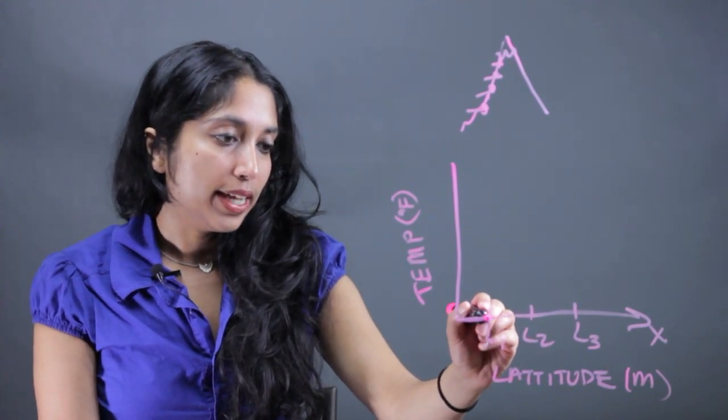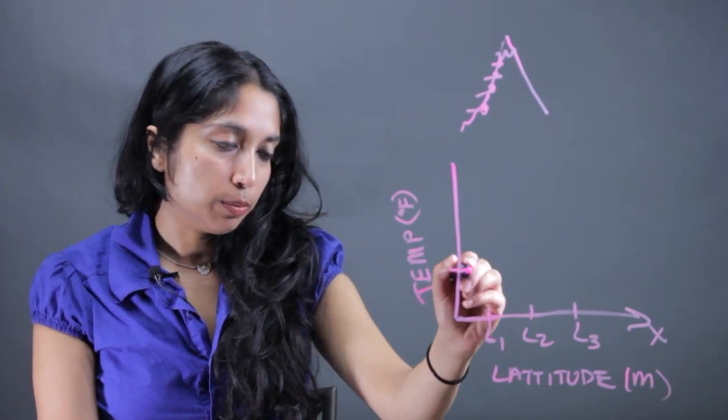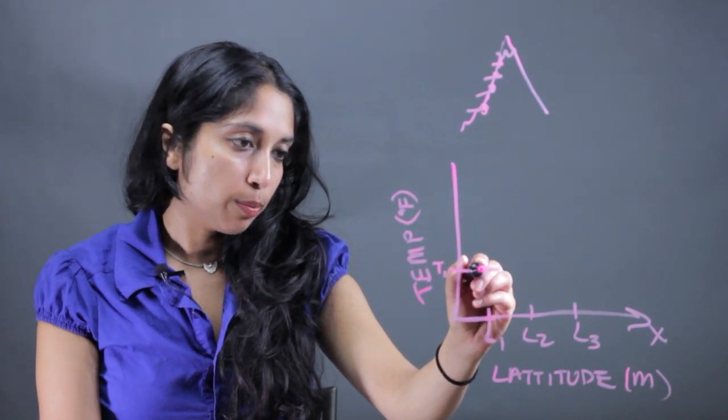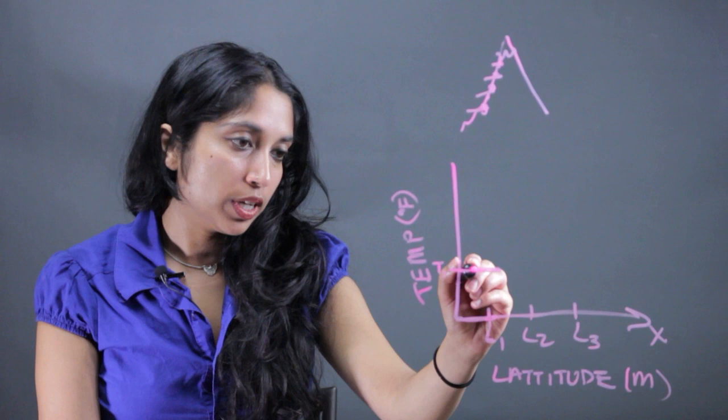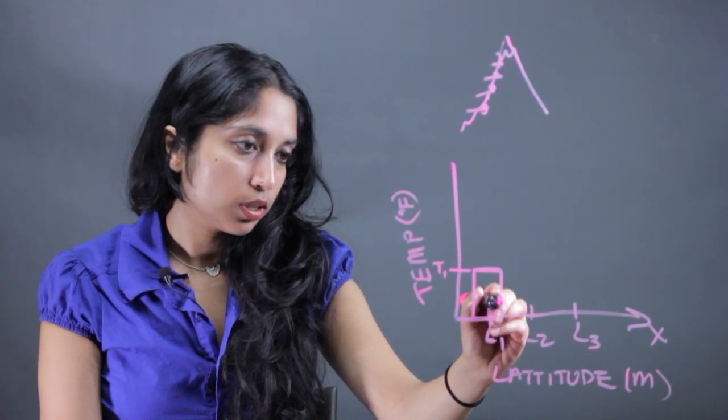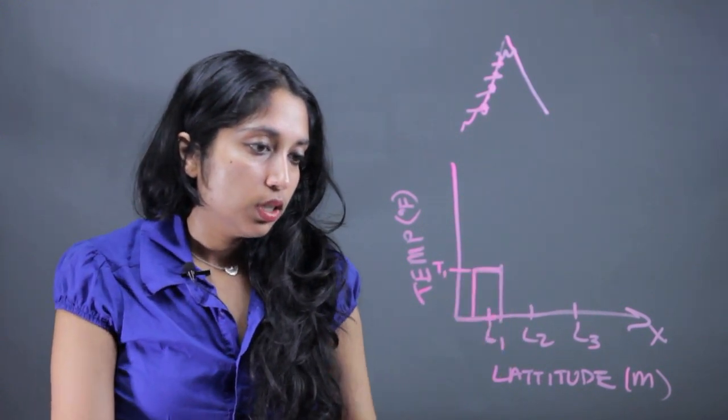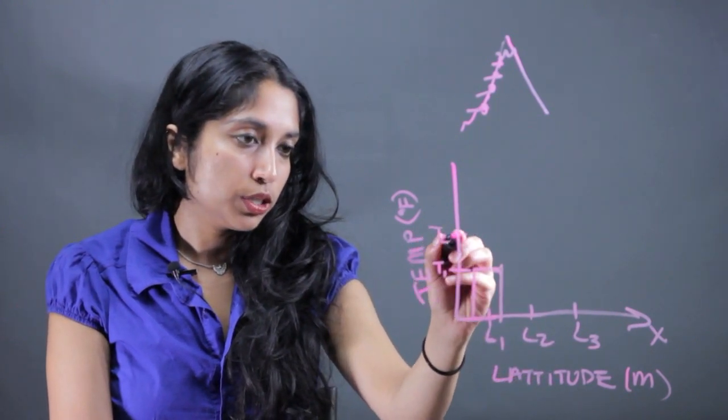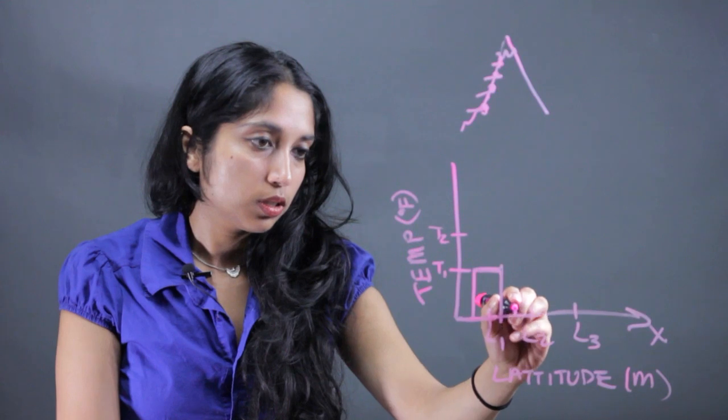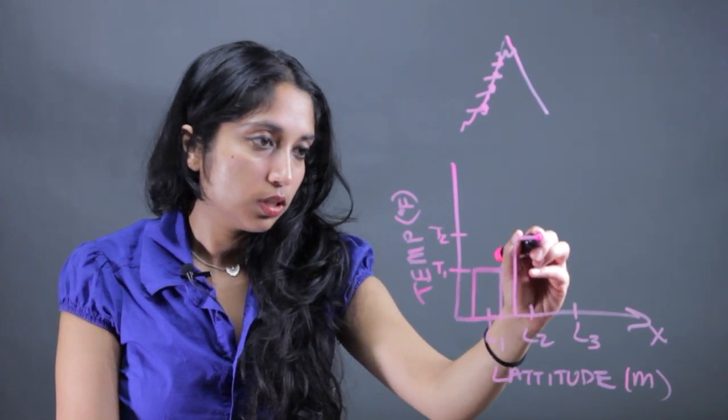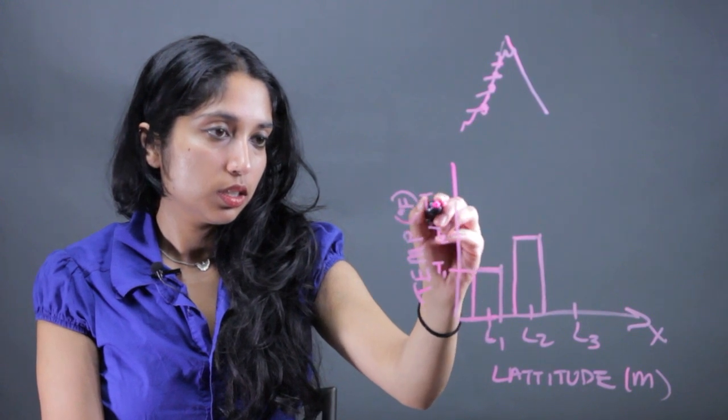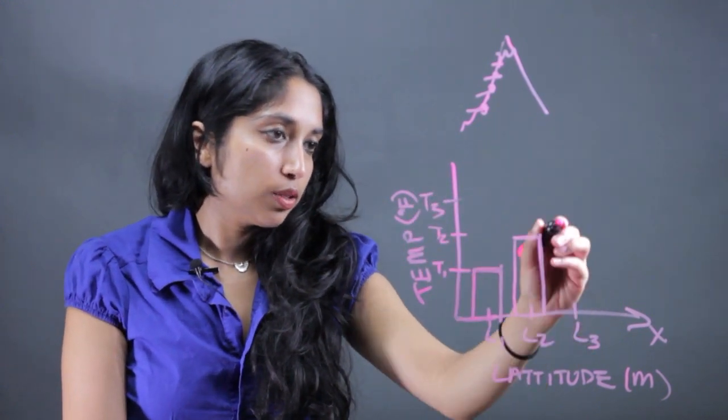So for a bar graph, at each latitude, we're going to get a specific temperature, T1. We're just going to create a bar with the top of it at the value we measured. We're going to keep doing that. So for latitude 2, you're going to get some measurement T2. Make another bar. L3, we're going to have some T3.